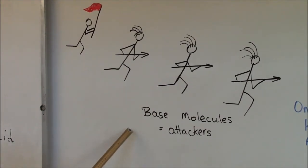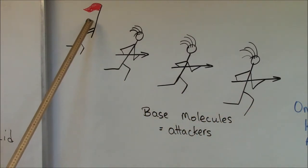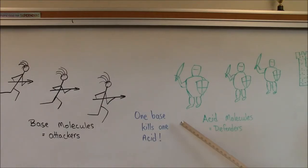The base molecules are the attackers. They will be added one at a time. In your titration that will mean drop by drop. Their goal is to wipe out the acid defenders and then raise a pink flag on the castle. The key to titration is this statement here. One base kills one acid.